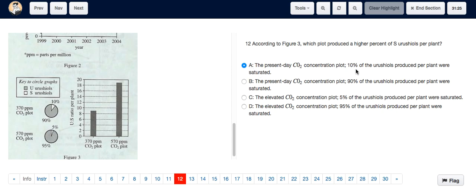And now we just have to determine what percent of the urushiols produced per plant was saturated. So we just have to look at the pie graphs here.